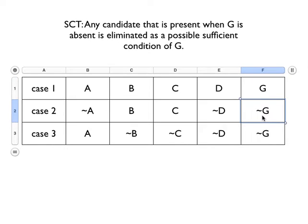In case two, our target feature is absent, as it is in case three. We're representing the absence of a feature with the tilde, so we can think of this as G is not present.